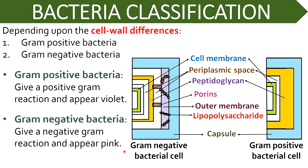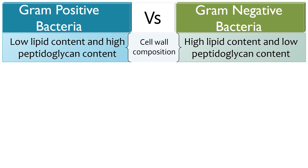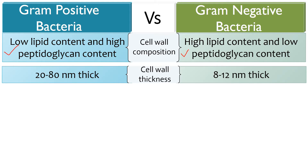Friends, if you have any doubts regarding gram staining or gram-positive or gram-negative reactions, that will be addressed in our upcoming videos. Now we will discuss the differences between gram-positive and gram-negative bacteria. The first difference is in the cell wall composition. Gram-positive bacteria contain 70–80% peptidoglycan and low lipid content, whereas gram-negative bacteria contain only 10–20% peptidoglycan and 20–30% lipid content. Due to high peptidoglycan content, the cell wall of gram-positive bacteria is thicker — about 20–80 nanometers — whereas gram-negative bacteria have a thin cell wall of about 8–12 nanometers.